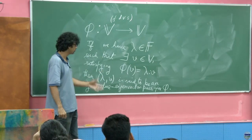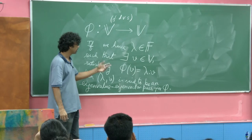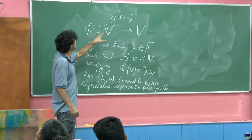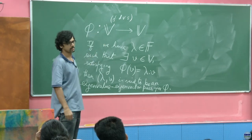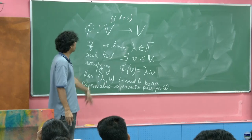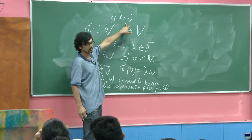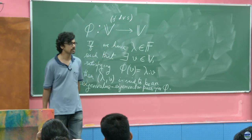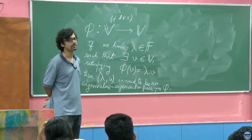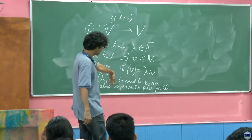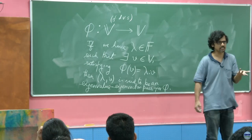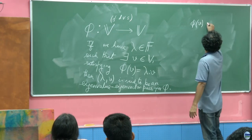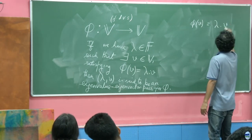You probably already know about eigenvalues and eigenvectors from earlier studies of matrix theory, but now we are defining this over operators on abstract vector spaces. Since we are dealing with finite-dimensional vector spaces and linear operators, just assigning an ordered basis means we will always be talking about matrices. So what we are asking for is: phi acting on v equals lambda times v.